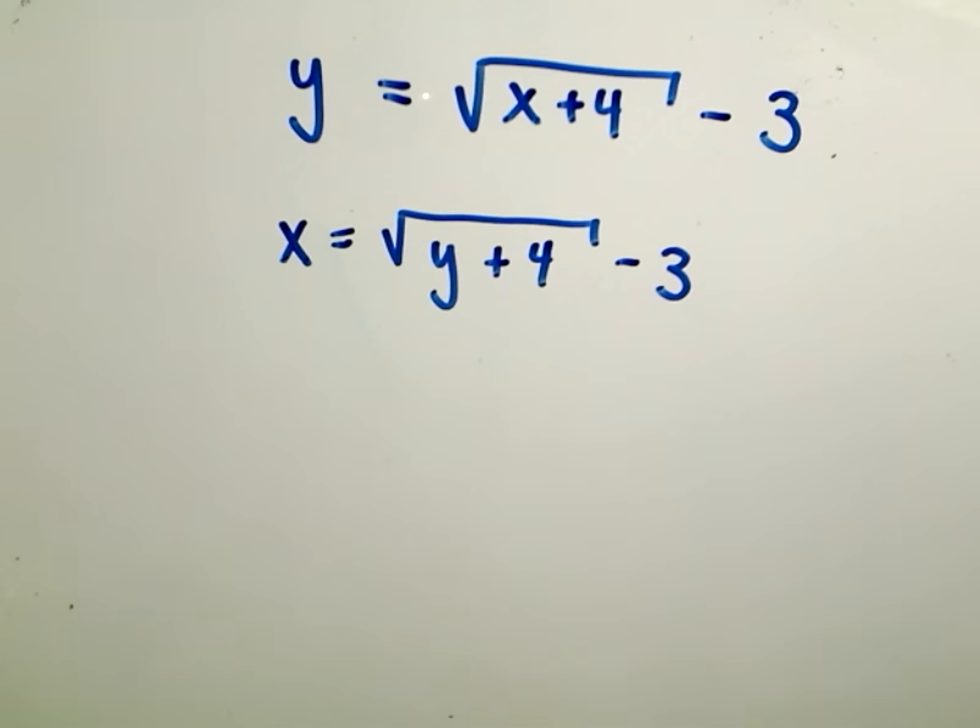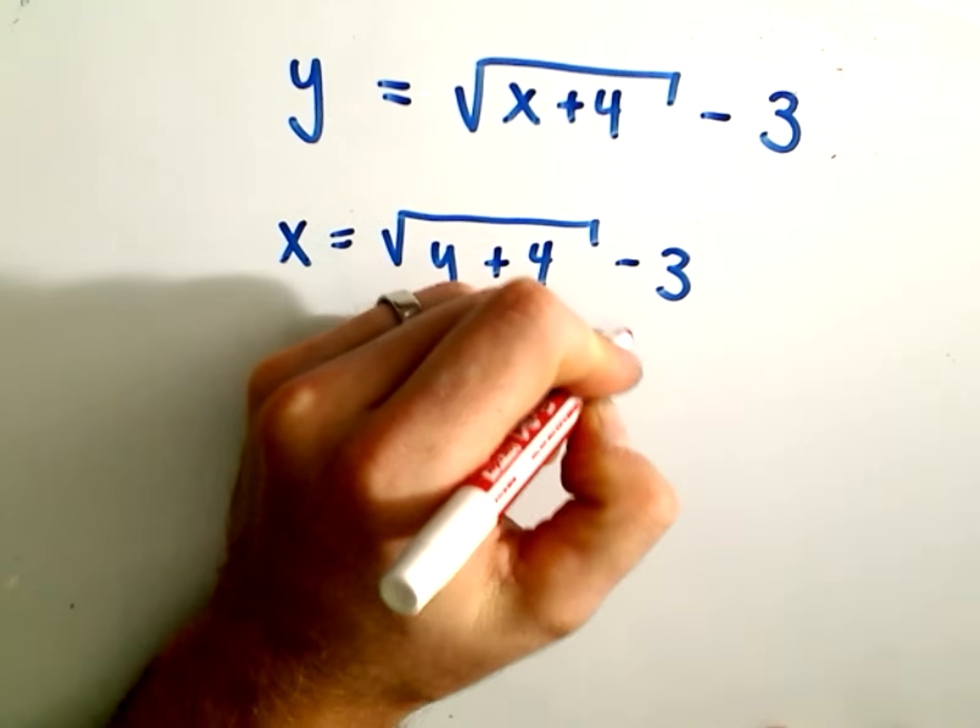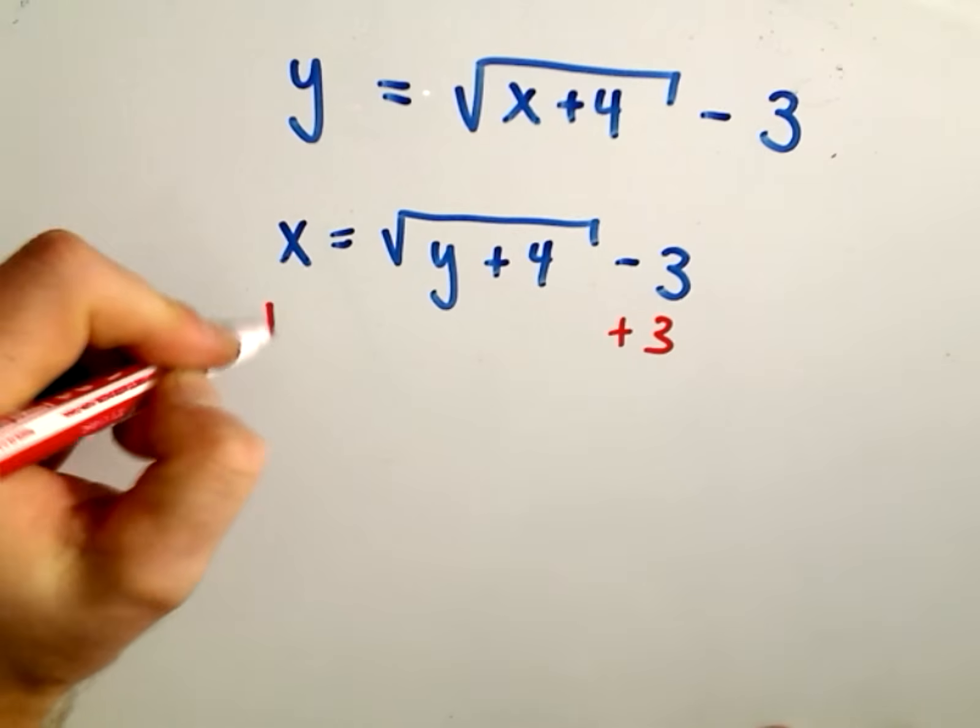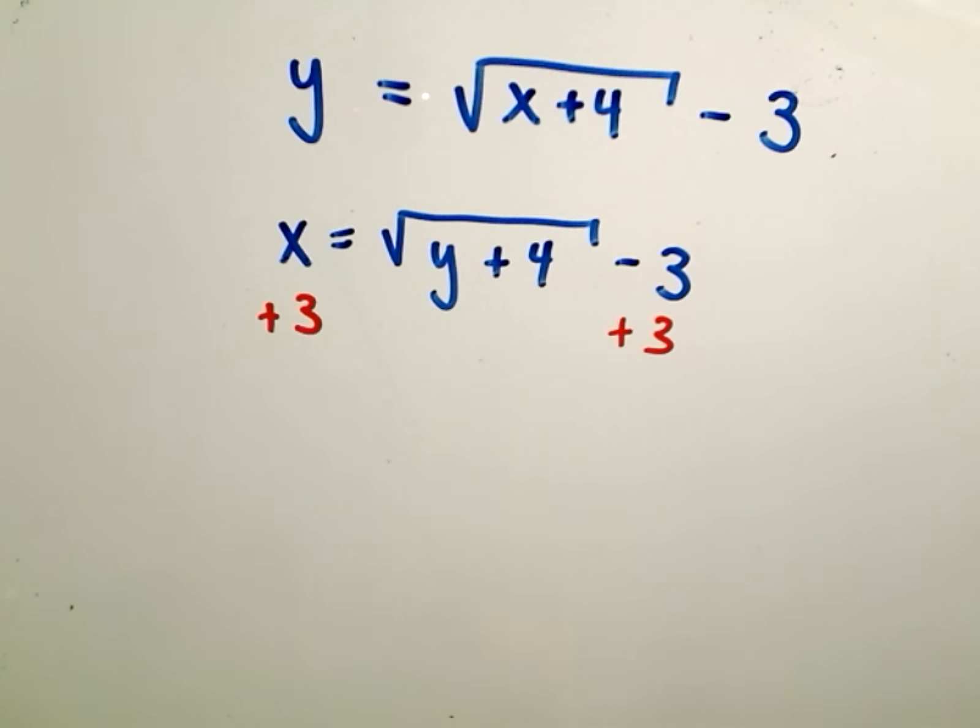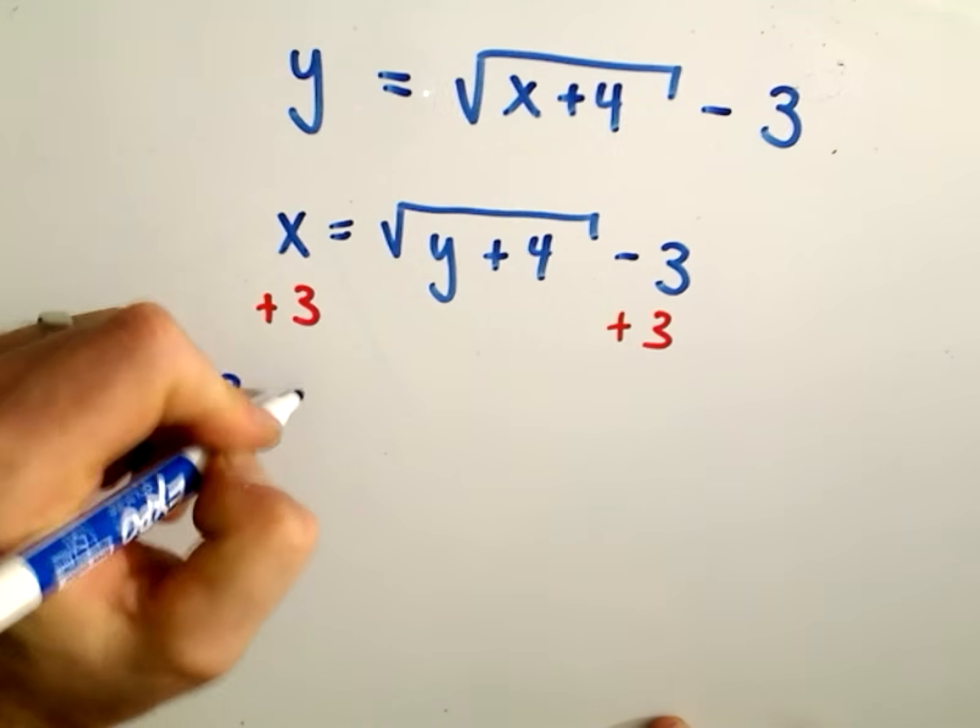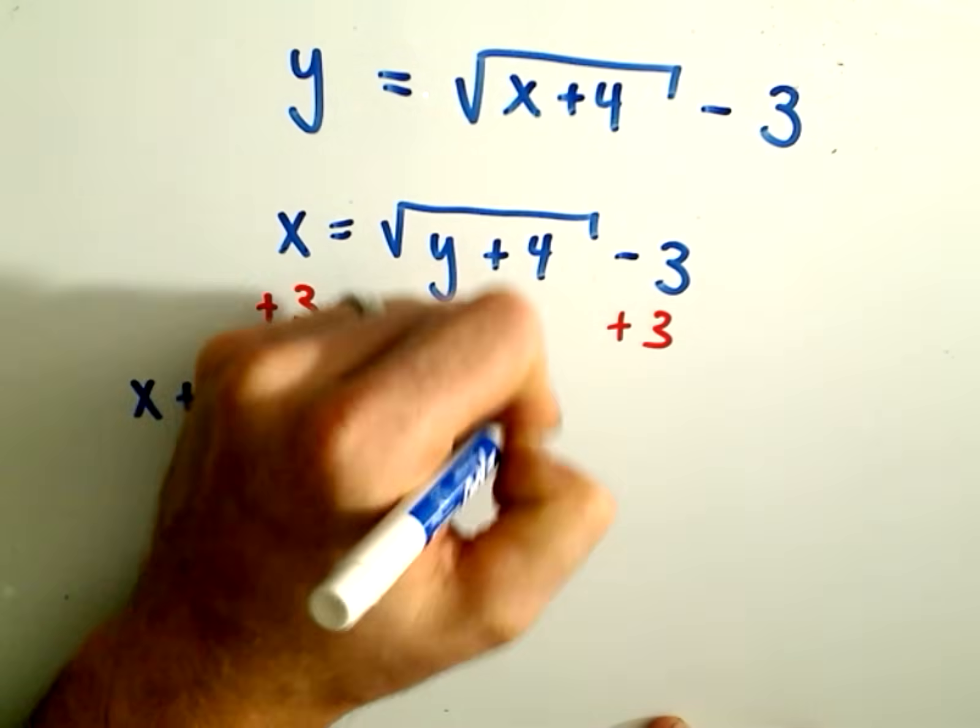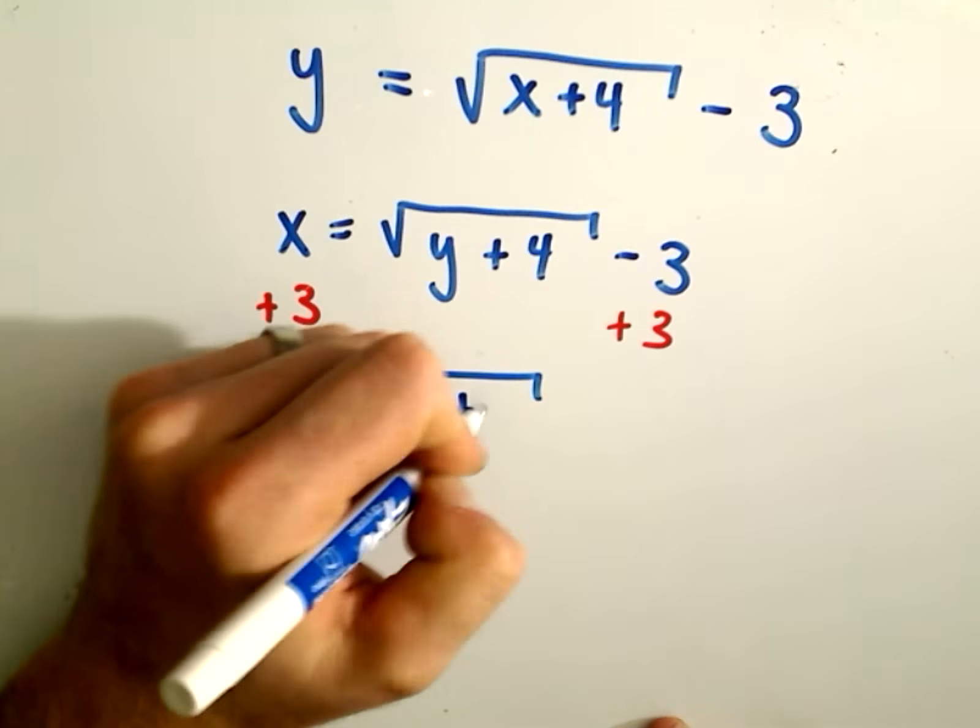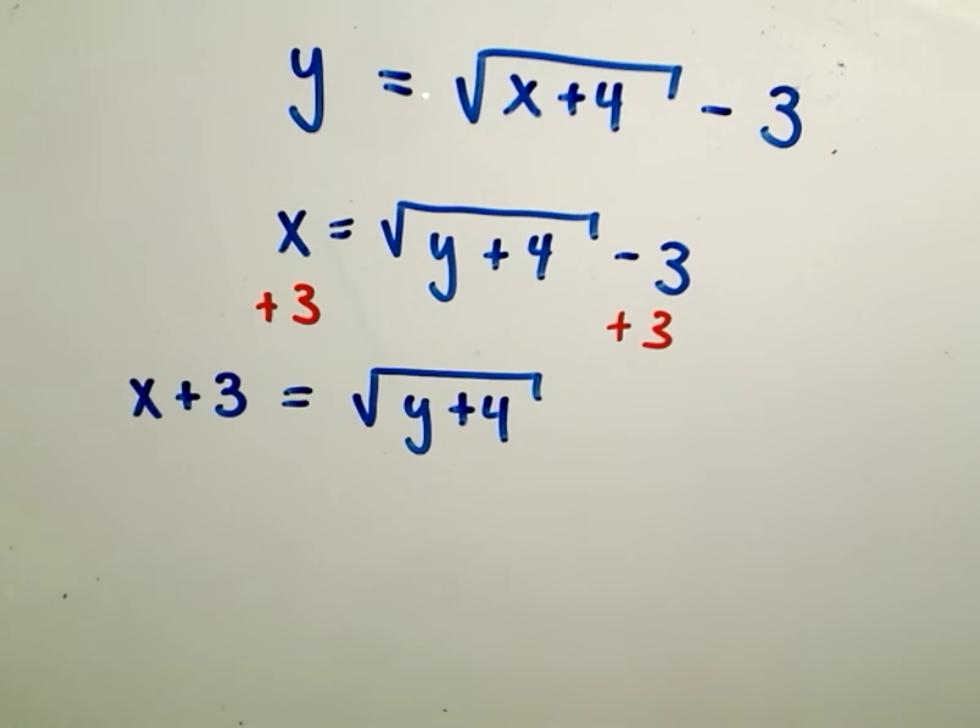I want to get the y by itself. So what I'm going to do in this case is I'm going to add 3 to both sides. You really can't combine that on the left, you'll just be left with x plus 3, and then we'll have the square root of y plus 4 hanging out.